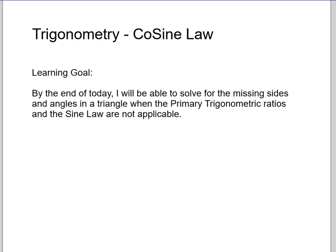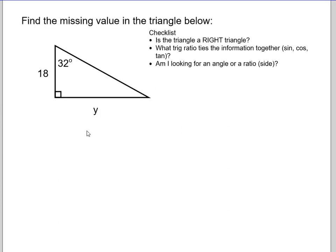Alright, today we're going to look at something called the cosine law. So the complement of sine, that's what cosine stands for. By the end of today I'll be able to solve for the missing sides and angles in a triangle when primary trig ratios and sine law are not applicable. We'll have a bit of a pecking order that we'll go through to make sure we're choosing the right strategy.